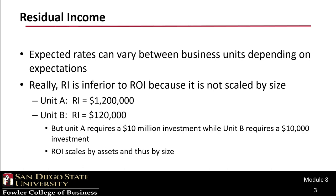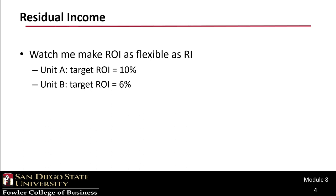However, you can make return on investment as flexible as residual income by simply setting different target ROIs between two units. You could set Unit A's target ROI at 10% and Unit B's at 6%, and you'd get the same sort of flexibility as residual income without having to worry about the scaling by size issue.